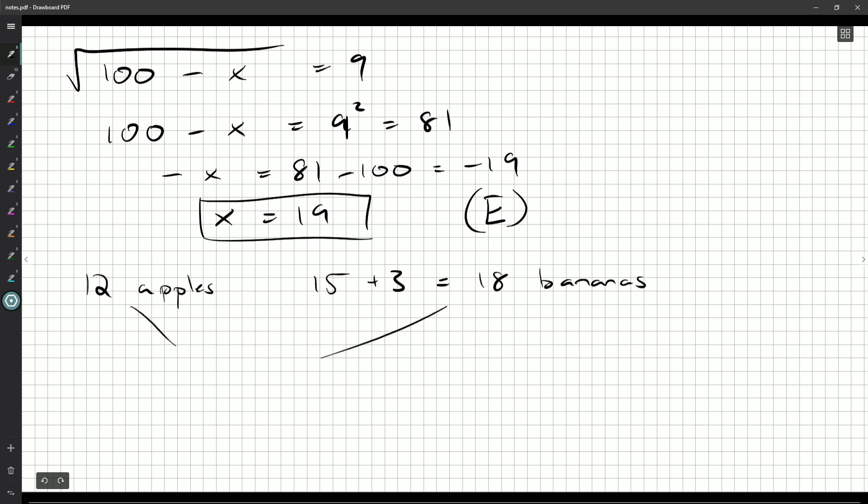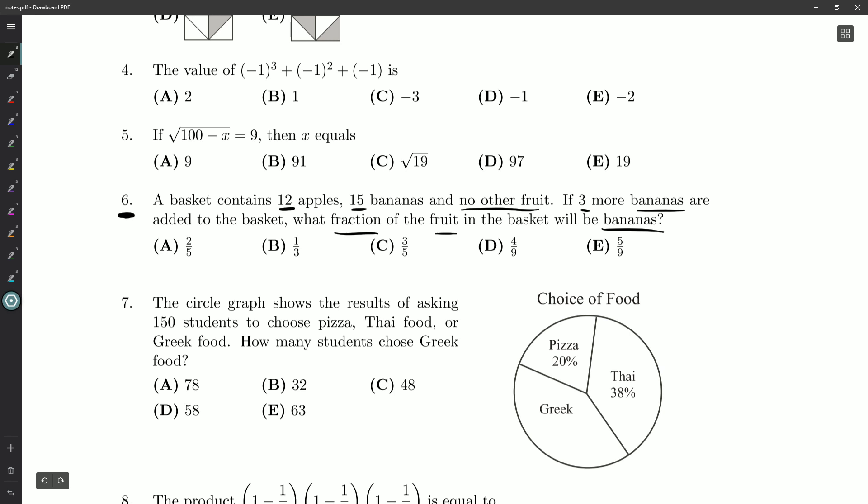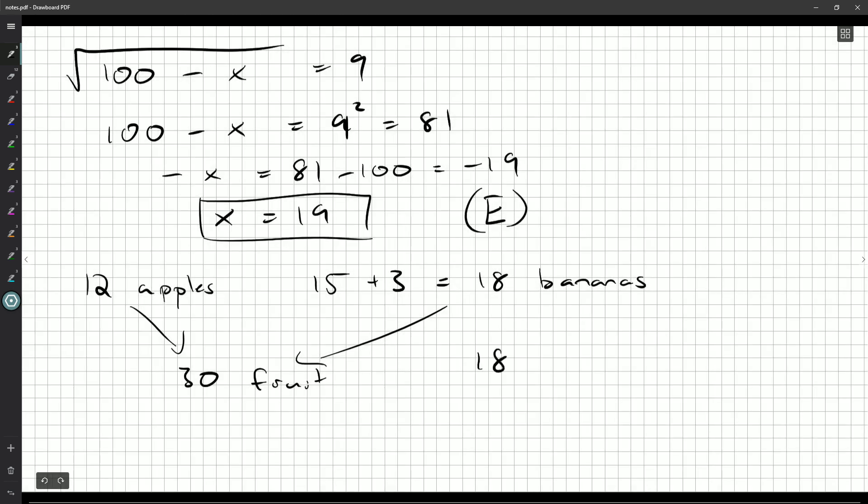Putting them together, the total amount of fruit is 12 plus 18, 30 pieces of fruit. And we want to know what fraction of the fruit is bananas. So 18 bananas out of the total 30. That's our fraction.